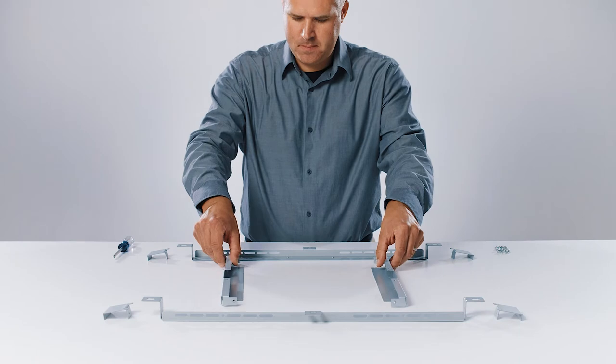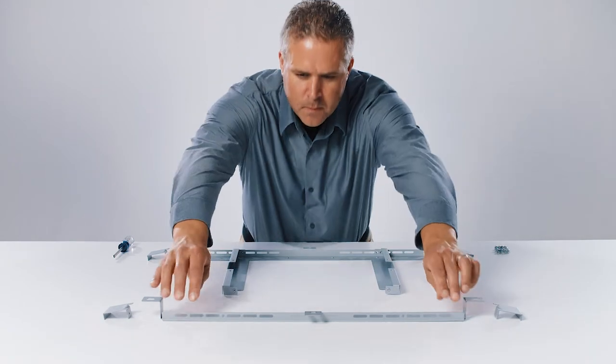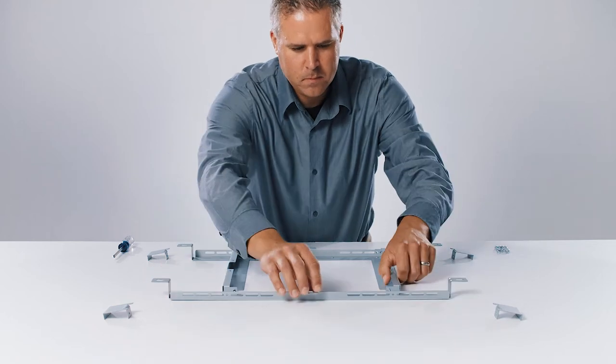Attach tile bridge A to tile bridge B using the 10mm M4 screws. Attach the other tile bridge A to tile bridge B forming a square.